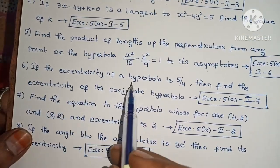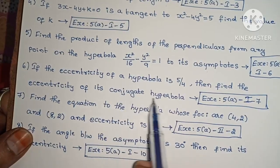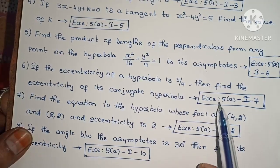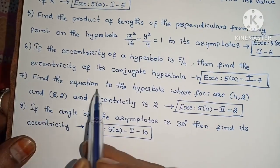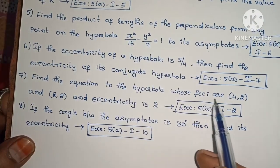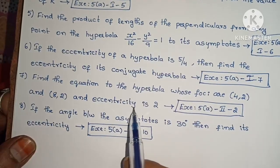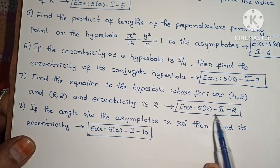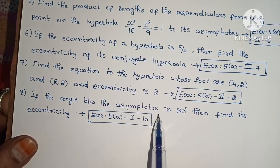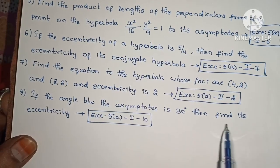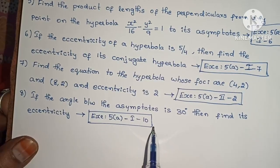Next, if the eccentricity of a hyperbola is 5/4, then find the eccentricity of its conjugate hyperbola. Exercise 5(a), Roman numeral I, problem 7. Next, find the equation of the hyperbola whose foci are (4, 2) and (8, 2), and eccentricity is 2. Exercise 5(a), Roman numeral II, problem 2. Next, if the angle between the asymptotes is 90°, then find its eccentricity. Exercise 5(a), Roman numeral I, problem 10.